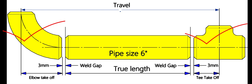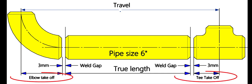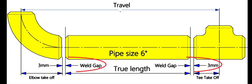To calculate the true length of the pipe, we need to know three things: The travel length, the takeoff length of the fittings, and the weld gap or the joint root gap.